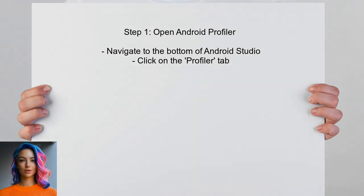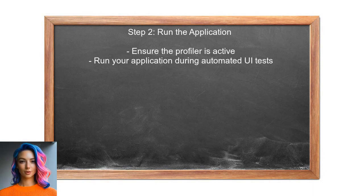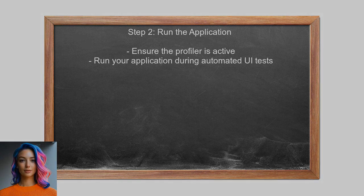To begin exporting profiling data from Android Studio, first open the Android Profiler. This can be done by navigating to the bottom of the Android Studio window and selecting the Profiler tab. Next, run your application while the profiler is active. This will allow the profiler to collect data on CPU usage and other metrics during the automated UI tests.